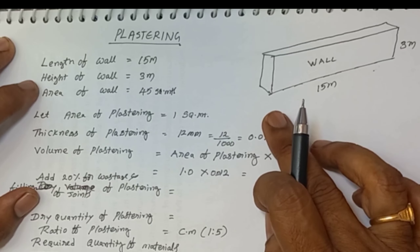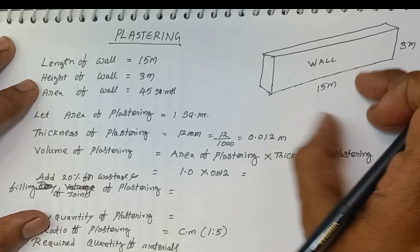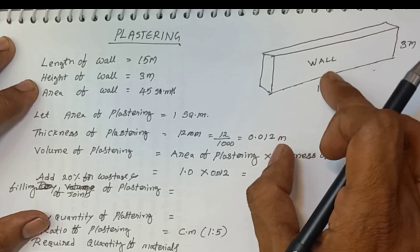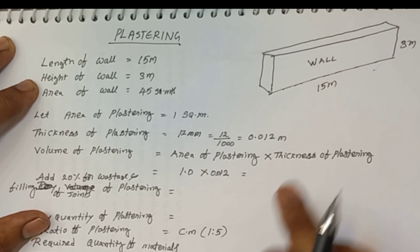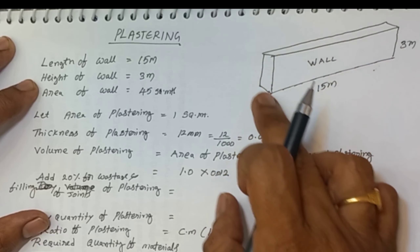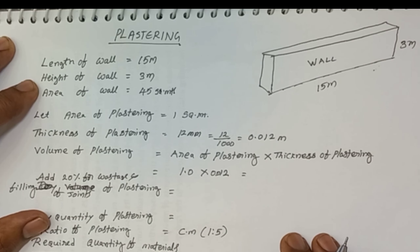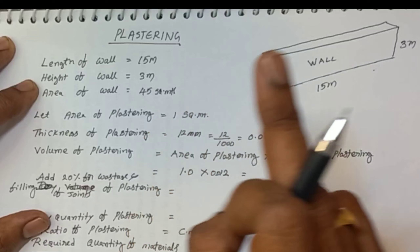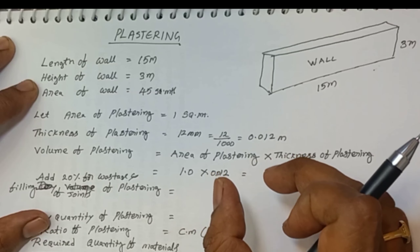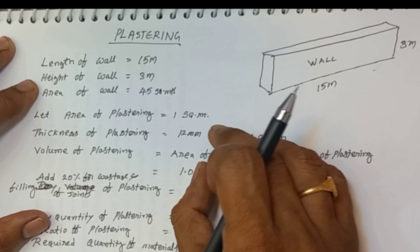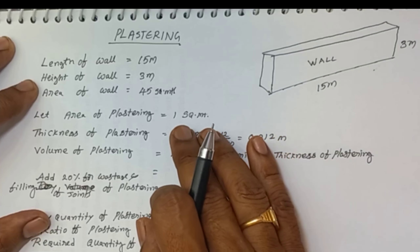Suppose if you want to take plastering for this wall of 15 meters length and 3 meters height, what is the quantity of cement and what is the quantity of sand required for this plastering work? That is our concept. We have to take the area of plastering for 1 square meter and calculate the quantity of cement and sand.